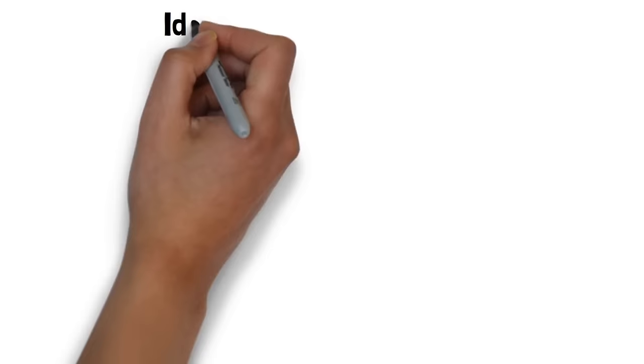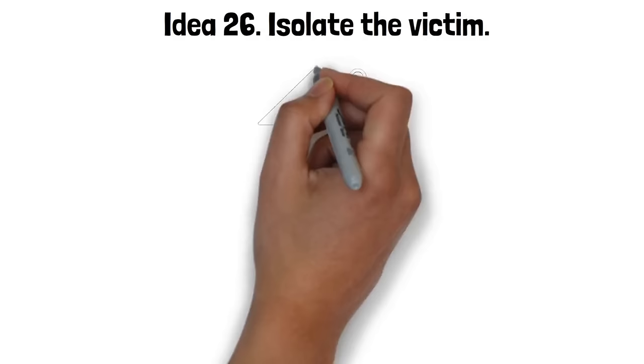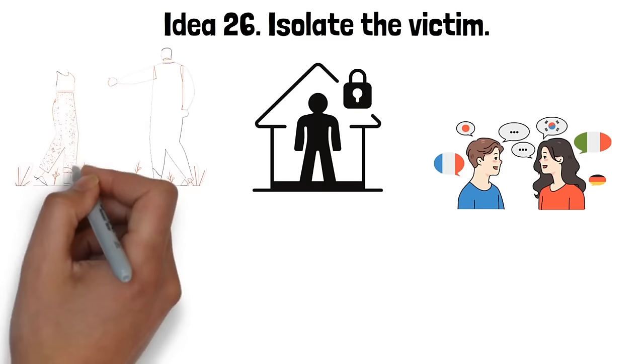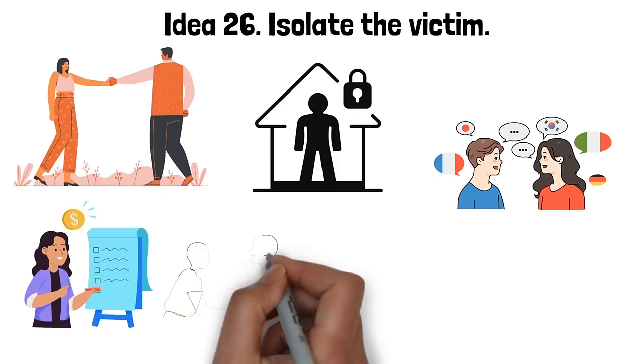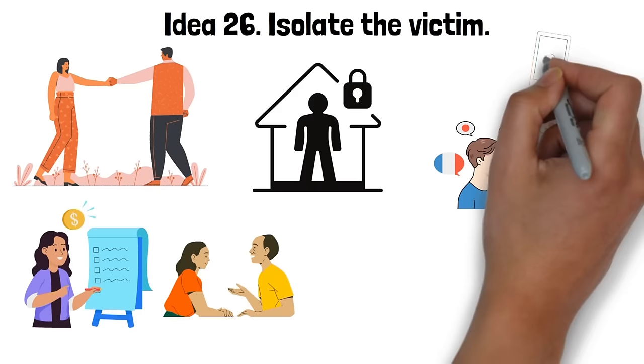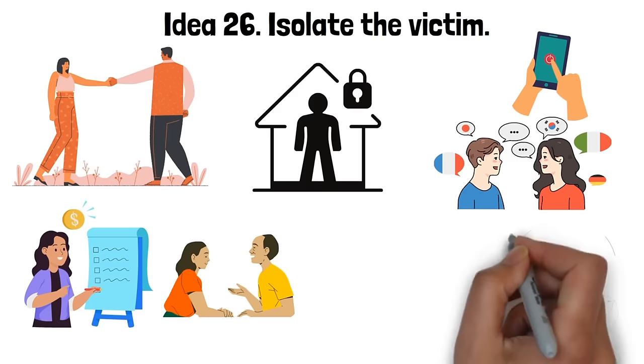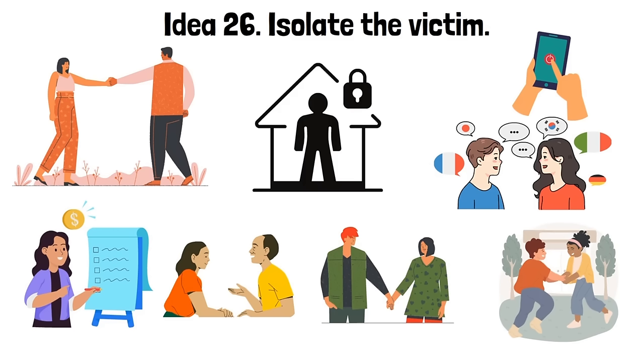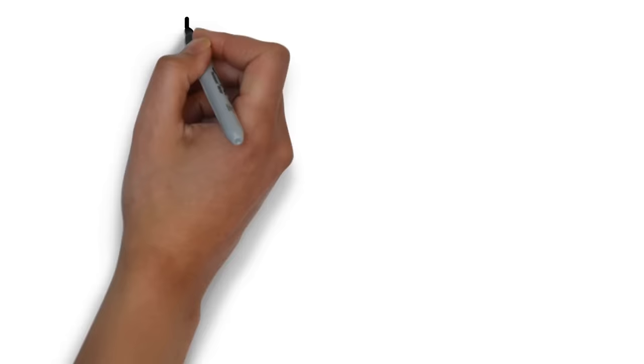Idea 26. Isolate the victim. Isolating the victim in the seduction process is about creating a space where you and the other person can interact without distractions or interruptions. It's about fostering a sense of exclusivity and intimacy, making the other person feel special and valued. This could involve planning activities that allow for one-on-one time or engaging in deep and meaningful conversations that allow for personal connection. Isolating the other person doesn't mean cutting them off from their social circles or daily life. Rather, it's about carving out a special place for your interactions where the outside world seems to fade away. This can intensify the connection between you, making your interactions more impactful and memorable.